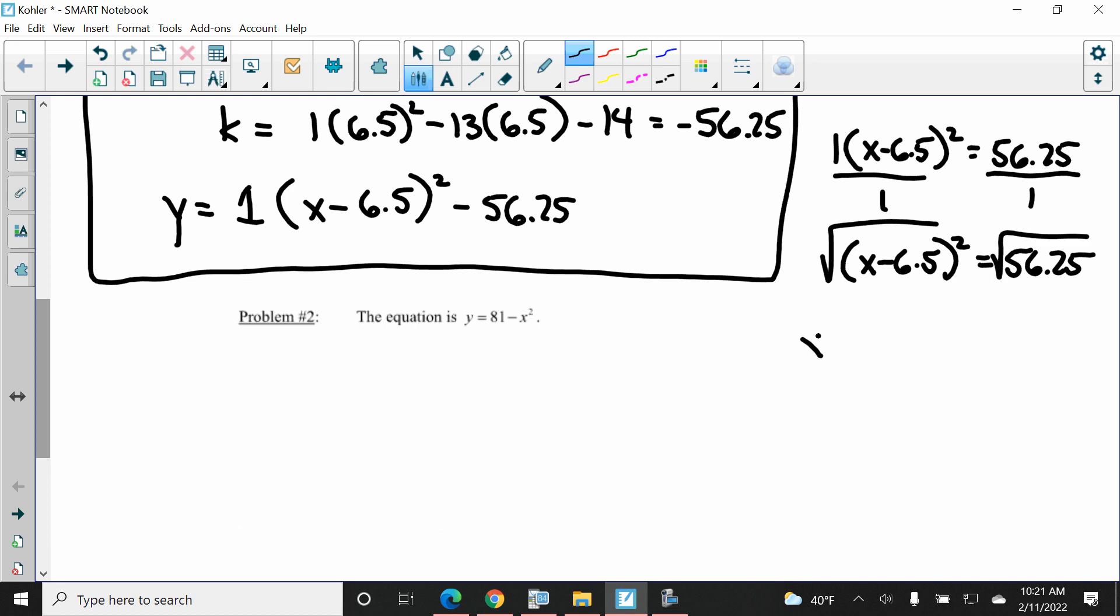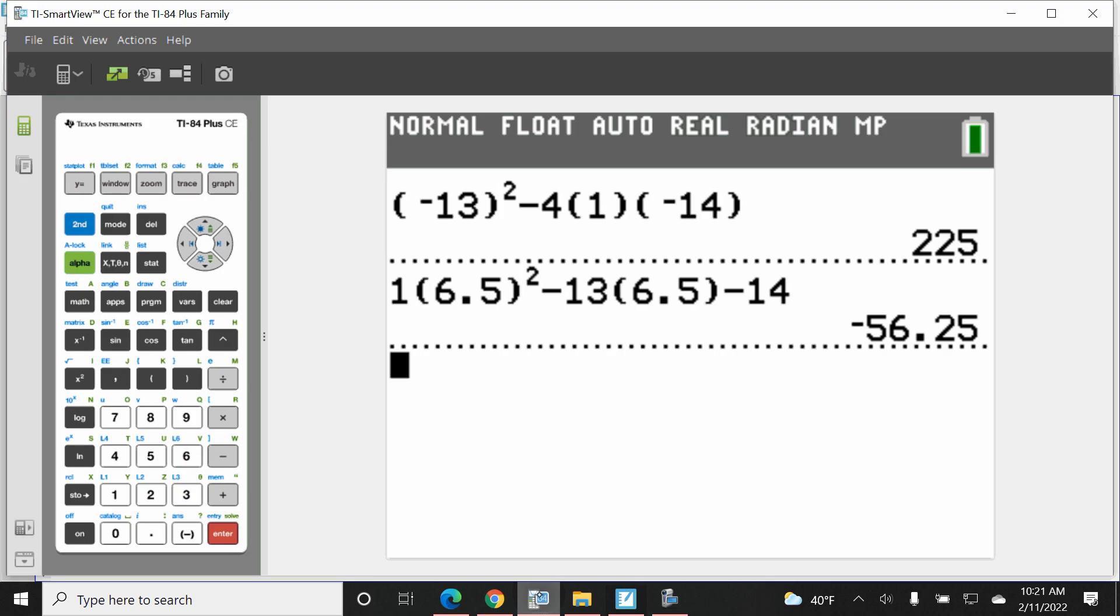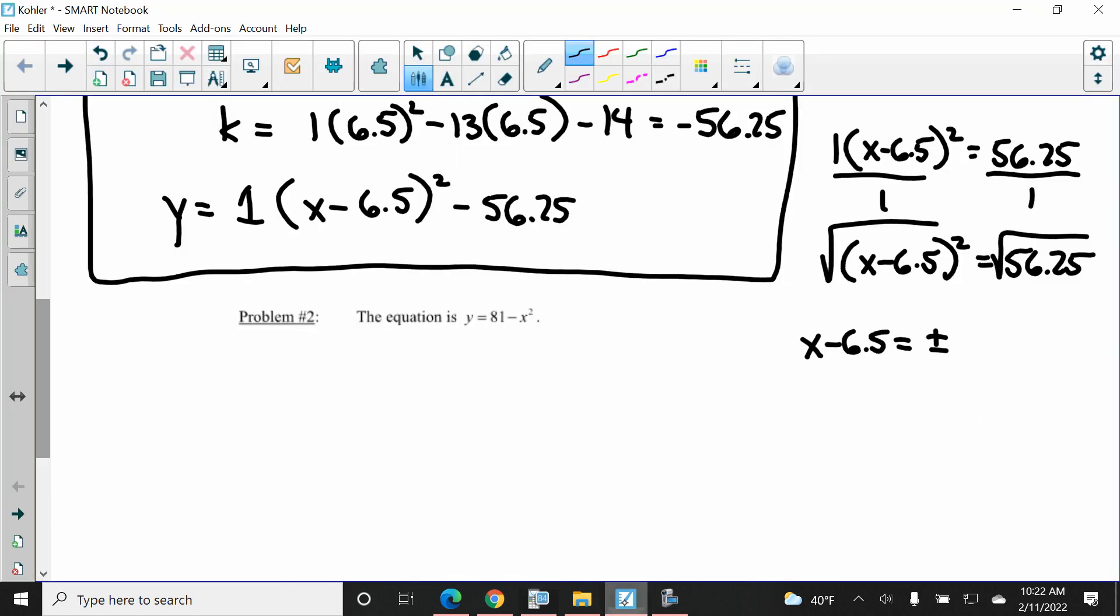I'm going to get my two answers. X minus 6.5 is equal to plus or minus the square root of 56.25, which is 7.5. And so we add 6.5 to both sides. And to get two answers, you add it to it and you subtract. So positive 7.5 plus 6.5 is 14. And negative 7.5 plus 6.5 is negative 1. There's completing the square.